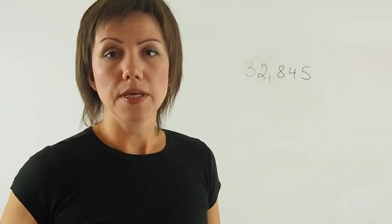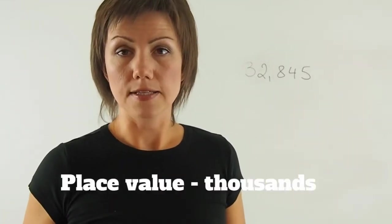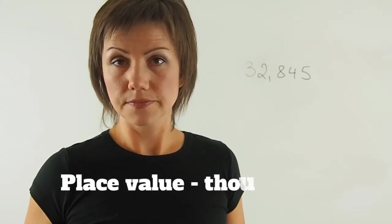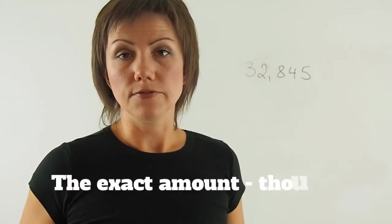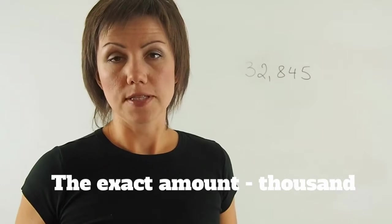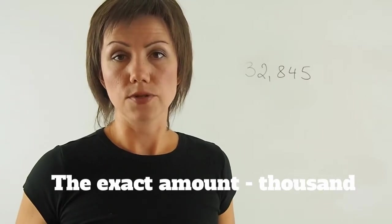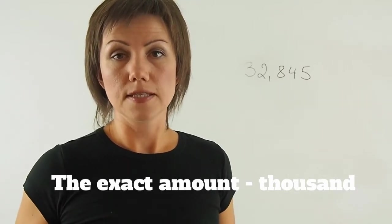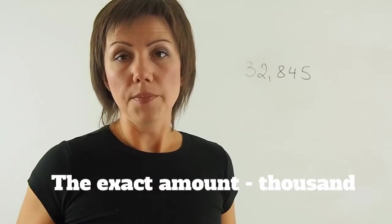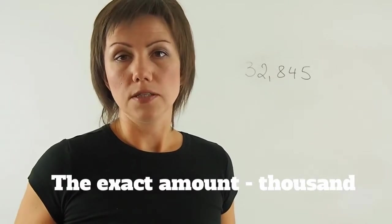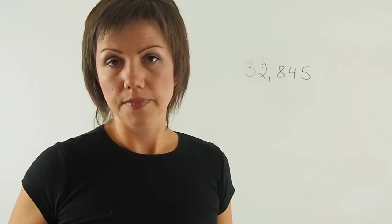When you're describing the place value, you're adding s to the word thousand. When you are just identifying a value, for example, three thousand, four thousand, one thousand, and it's identified by a number, then you do not need to add s at the end.